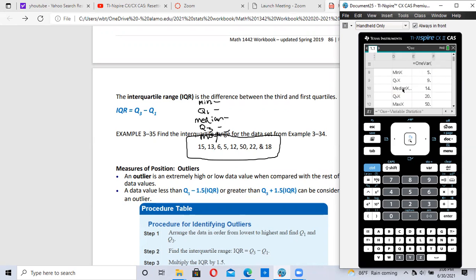So my minimum piece of data, the smallest piece of data is 5. Q1 is 9. Median is 14. Q3 is 20. And the maximum piece of data is 50.